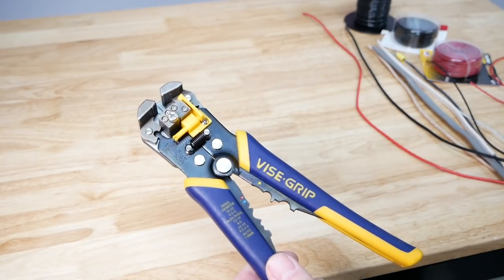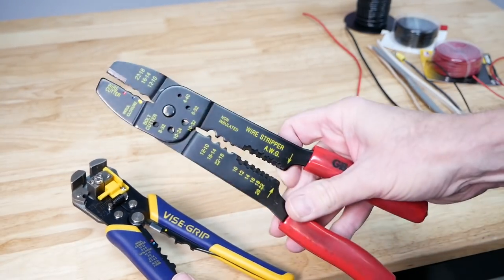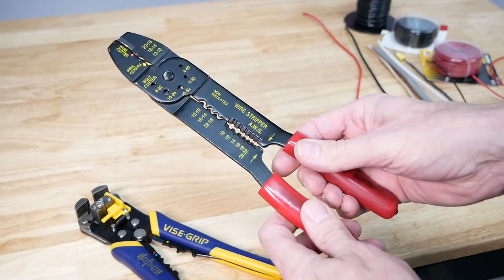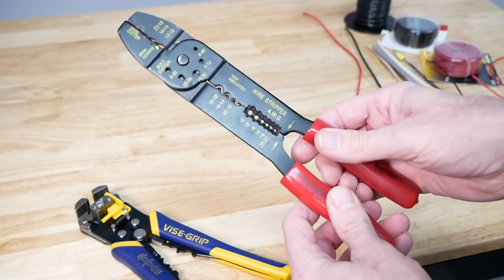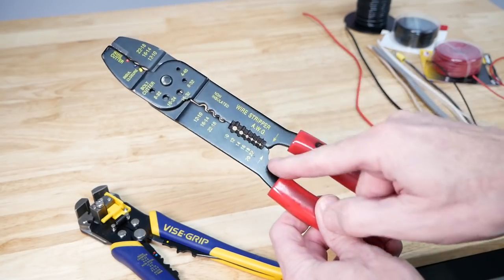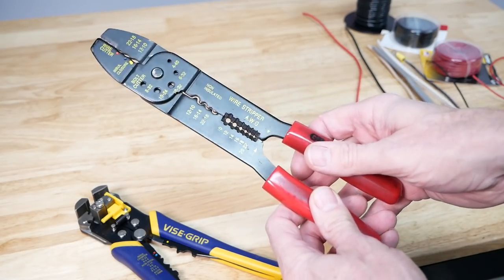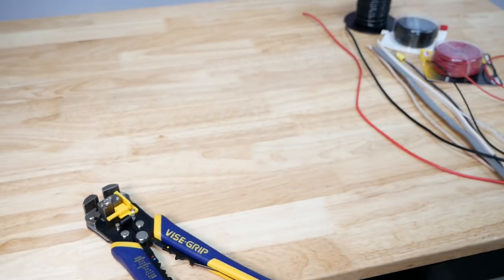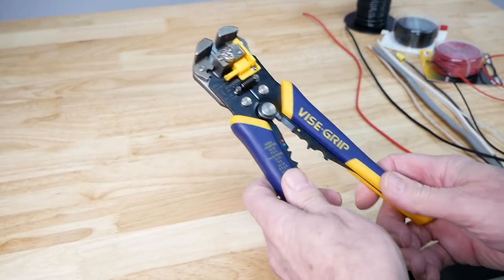What I used to use all the time was one of these, and I don't even remember where I got it, but I've had it for years, and the problem is I never could figure out exactly which gauge wire cutter to use because sometimes it wasn't very accurate, but you don't have to worry about that with this one from Vice Grip.